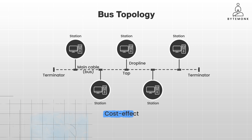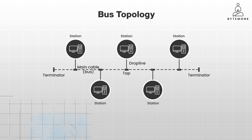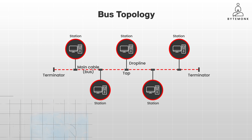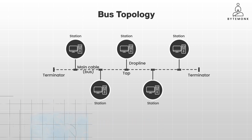A bus topology is cost effective and utilizes less cable compared to other types. It tends to be used for small networks because its scalability is pretty low — the main cable has a limited length, making it impractical to connect more than a certain number of stations. Overall, installation difficulty for bus topology is average. If a drop line or one station becomes corrupted, it doesn't affect the whole network; however, if there is an issue with the main cable, the whole network goes down. Due to its simplicity and low cost, bus topology can be suitable for small networks such as home networks, small office setups, or educational environments to demonstrate basic networking concepts.